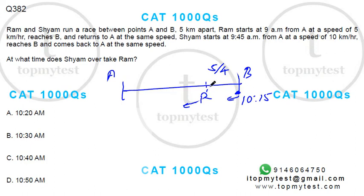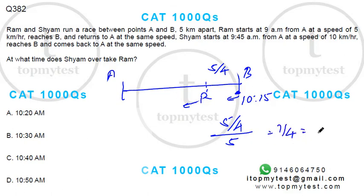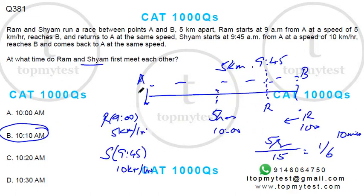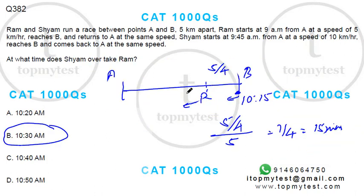Now applying relative speed: the gap is five-fourths kilometers and the relative speed is 10 minus 5, which is 5 km/h. So the time to close the gap is one-fourth of an hour, which is 15 minutes. Fifteen minutes after 10:15 is 10:30. Option B is the correct choice. That's a straightforward application of time and distance concepts.